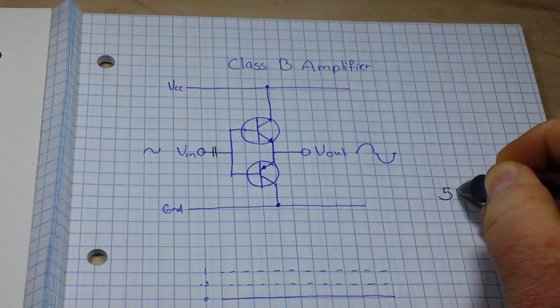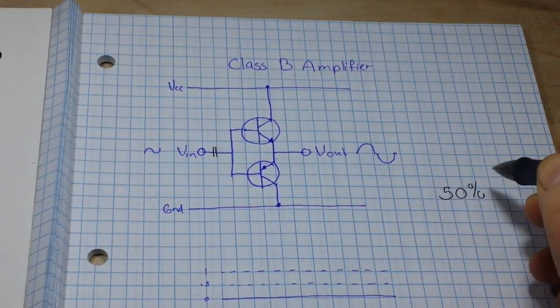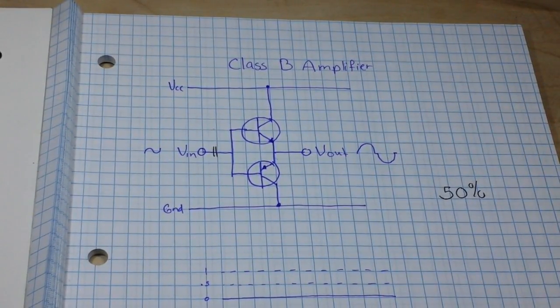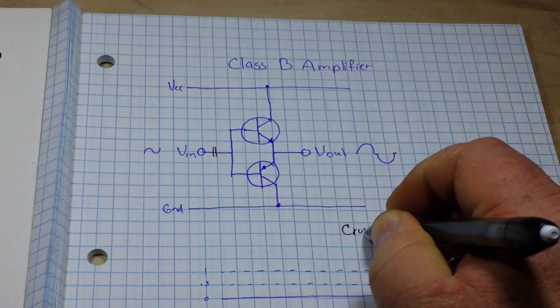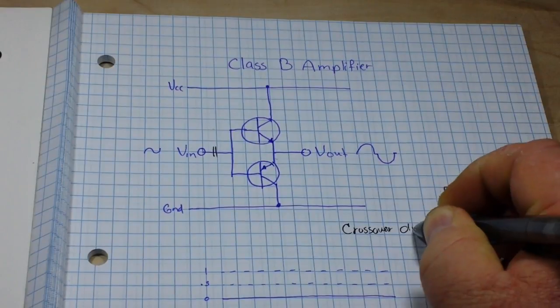While our efficiency is now up around 50%, we have something new called crossover distortion.